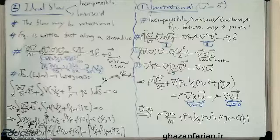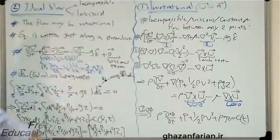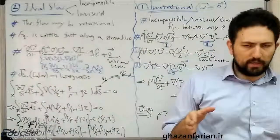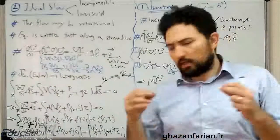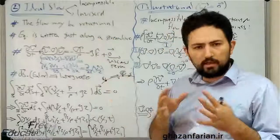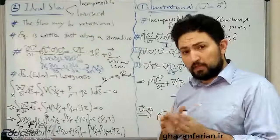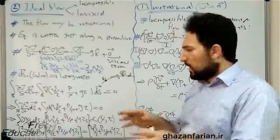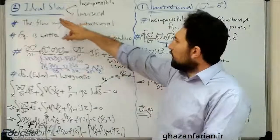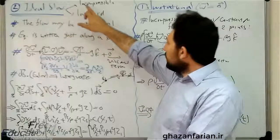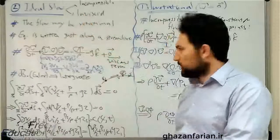The second version of Bernoulli's equation is for ideal flow. Based on your knowledge in basic fluid mechanics, incompressible and inviscid flow is called ideal flow. Ideal flow is something different from the ideal gas or perfect gas. This is a name which is used for incompressible and inviscid flows.